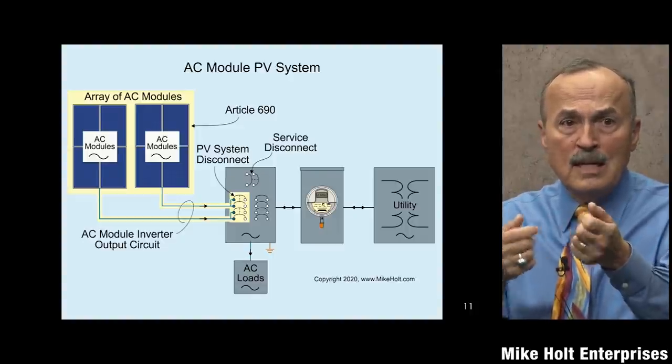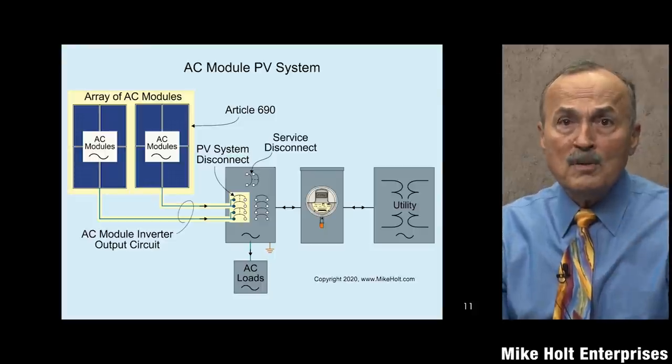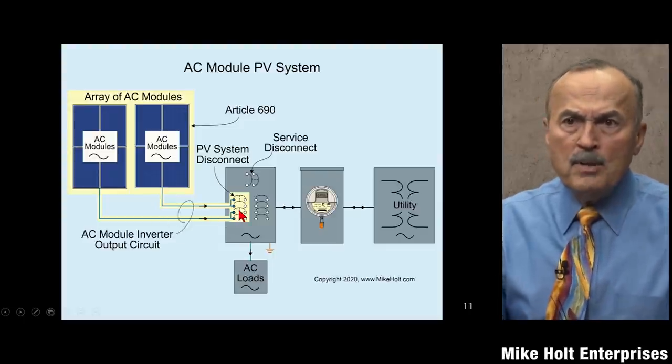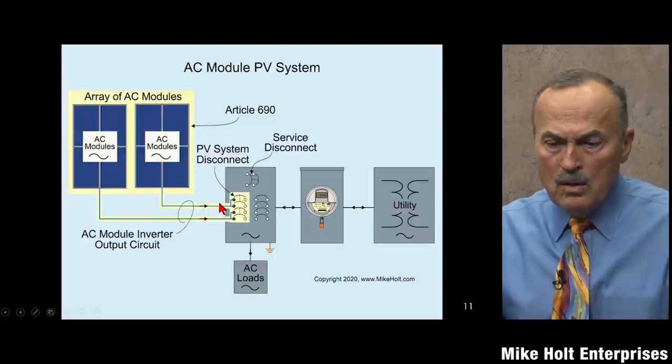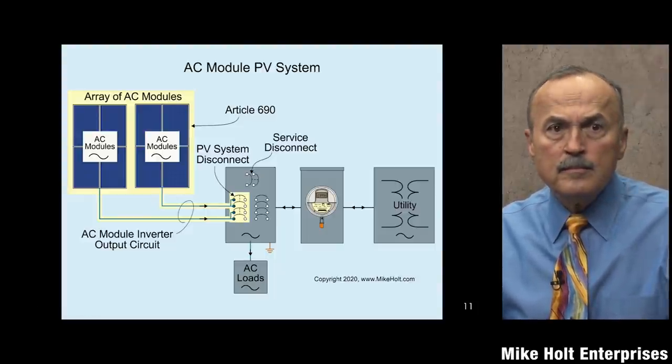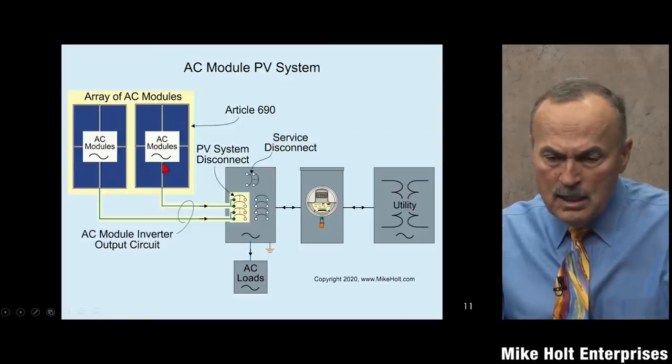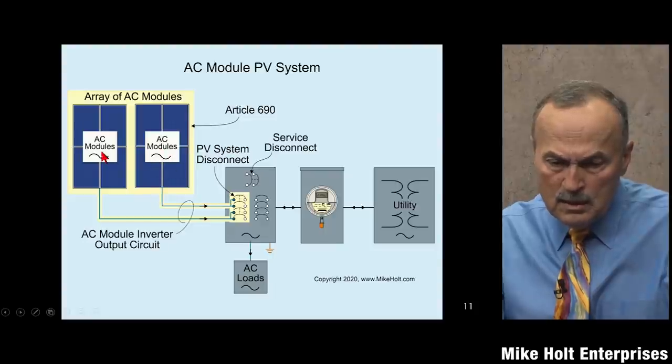With AC modules, you've removed a whole bunch of Article 690 code rules. The only part of Article 690 that would apply is the inverter output circuit conductors. You follow the manufacturer's instructions for breaker sizing, and for all practical purposes it's plug-and-play. The modules look like regular panels - you wouldn't even know unless you flipped one over. We'll show a picture when we talk about definitions.